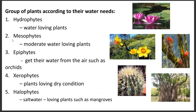These are the different groups of plants according to their water needs. We have hydrophytes, which are water-loving plants such as water lilies. We also have mesophytes, which are moderate water-loving plants. Epiphytes get their water from the air, such as orchids hanging on a tree. We have xerophytes, plants loving dry conditions in the desert, for example your cactus. And halophytes, which are saltwater-loving plants such as mangroves near the sea.